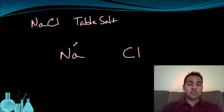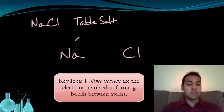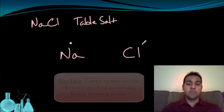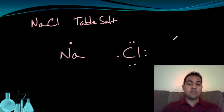The first thing I'm going to do is look at their valence electrons, because the valence electrons are the ones that are going to be involved in bonding. Sodium has one valence electron. Chlorine has seven. There's chlorine's valence electrons drawn in. That's my first step.